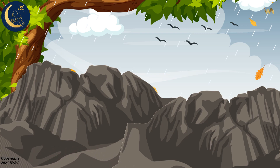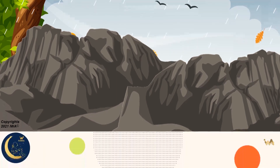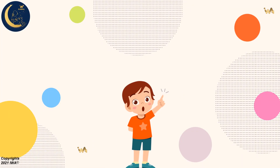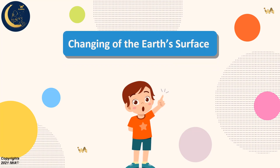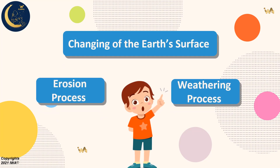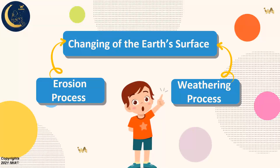And this process is called erosion. Erosion is the process by which rock fragments are moved from one place to another. So, my friends, the process of weathering and erosion contribute to the damage of the Earth's surface. And these two processes go hand in hand.